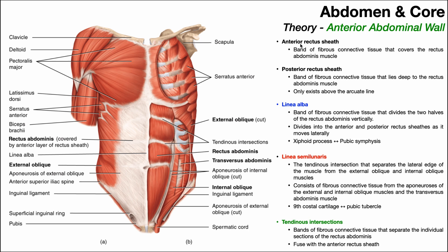The anterior rectus sheath is a band of fibrous connective tissue that covers the rectus abdominis muscle. Being that it is the anterior rectus sheath, it lies anterior — or superficial — to the rectus abdominis muscle. Notice if we go lateral to the anterior rectus sheath, we start to blend into the obliques. And if we go medially, we get to the midline, where there is a significant thickening of that same connective tissue called the linea alba.